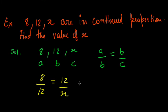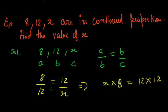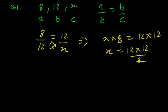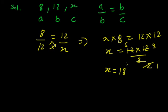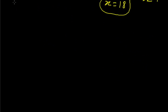By cross multiplying, this implies x into eight equals twelve into twelve. So x equals twelve into twelve upon eight. We can cancel by four: two times, and three times again, cancelling two with one and two with six. Therefore x equals eighteen, so the value of x is eighteen.